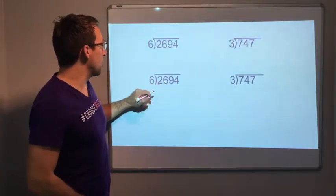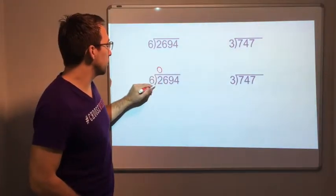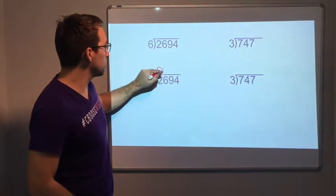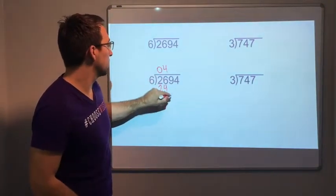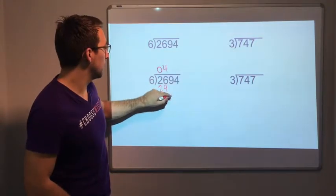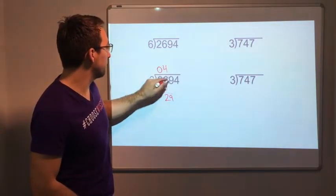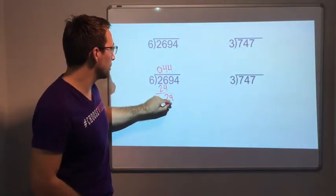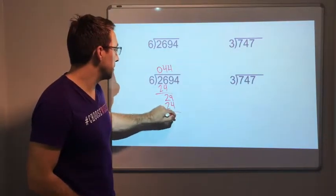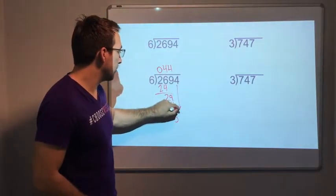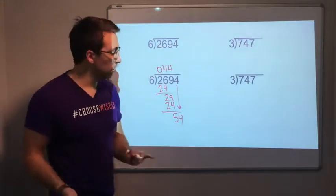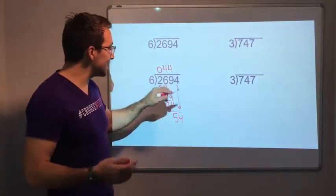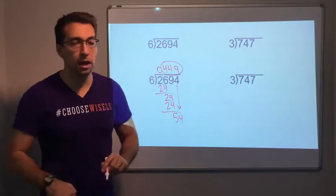We'll start here, we'll do the regular. 6 does not go into 2, so we can add a zero here. 6 goes into 26 four times. Then add our 9, drop our 9. 4 times, because that's 24, and that's going to be 5. Drop the 4 down. 54 divided by 6, 9 times 6. So our answer is 449.